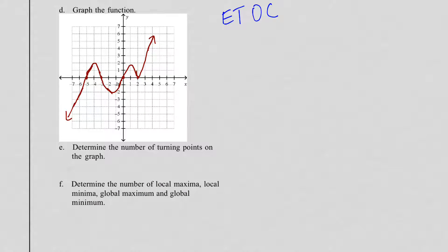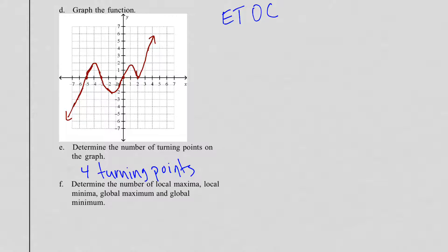Part E: determine the number of turning points. A turning point is any time the graph changes direction — from going up to coming down, or from coming down to going up. Every hill and valley is a turning point. Looking at the graph, there are four turning points. Make sure your graph is correct, otherwise your turning point count will be wrong too.